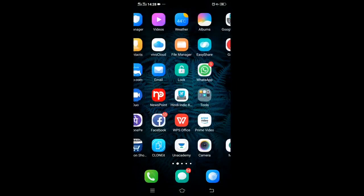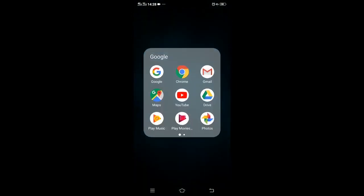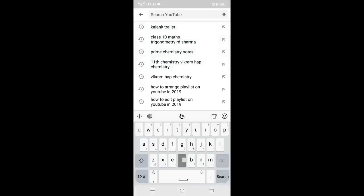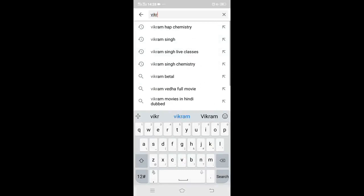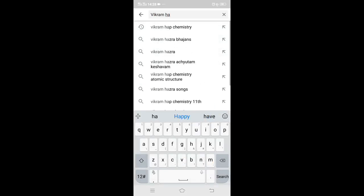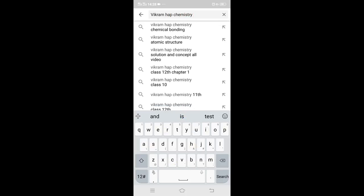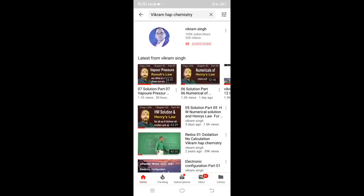I will tell you how many videos are open and how many videos you can see. First of all, you can open the YouTube. Then you can search Vikram Hab Chemistry. This is the same page. My video has opened and then my channel will open. The channel's name is Vikram Singh. I will select Vikram Hab Chemistry.